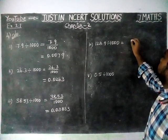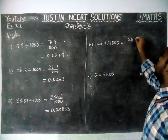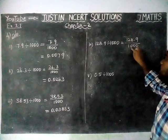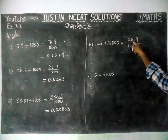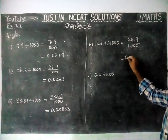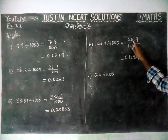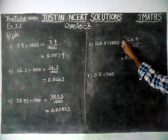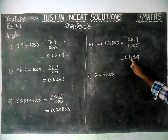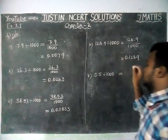Fourth question: 128.9 divided by 1000. The denominator has 3 zeros, so we have to move left-hand side 3 steps. Moving 1, 2, 3 steps to the left, the answer is 0.1289.